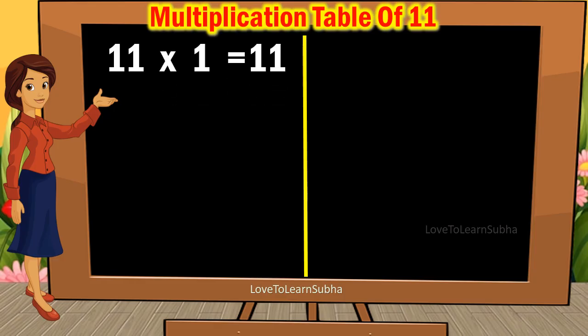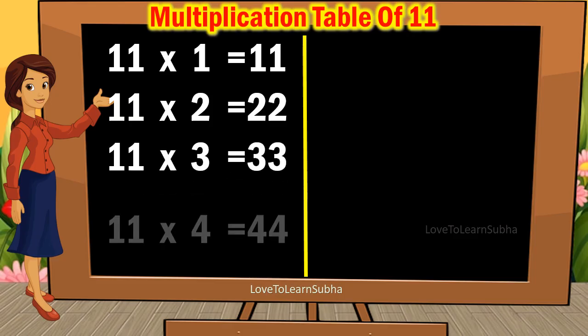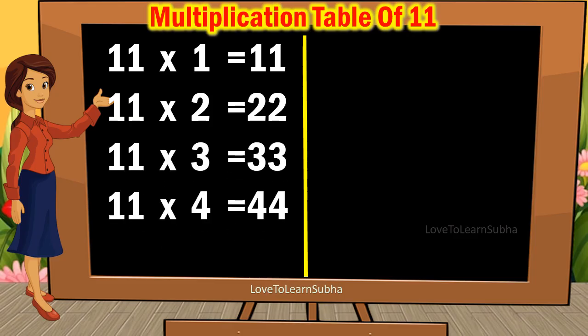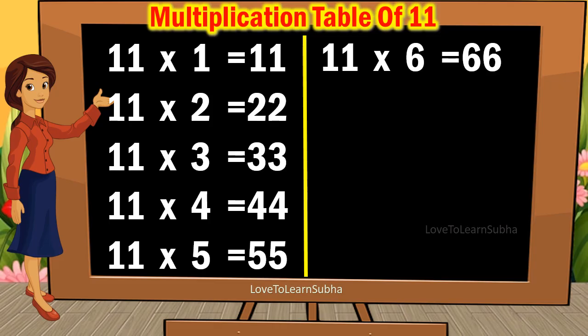11 1s are 11. 11 2s are 22. 11 3s are 33. 11 4s are 44. 11 5s are 55. 11 6s are 66.